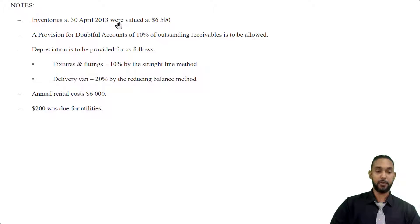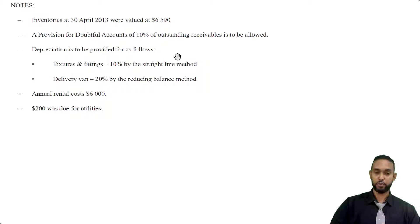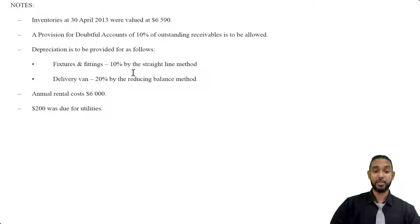A provision for doubtful accounts of 10% of outstanding receivables is to be allowed, so we're probably going to have to find that provision. Depreciation is to be provided as follows: fixtures and fittings at 10% by the straight line method, so we take 10% and multiply by the cost of the asset. Delivery van at 20% by the reducing balance method, so we take 20% and multiply by the net book value of the asset. We also have annual rental cost of $6,000 and $200 due for utilities — that's an accrued expense.